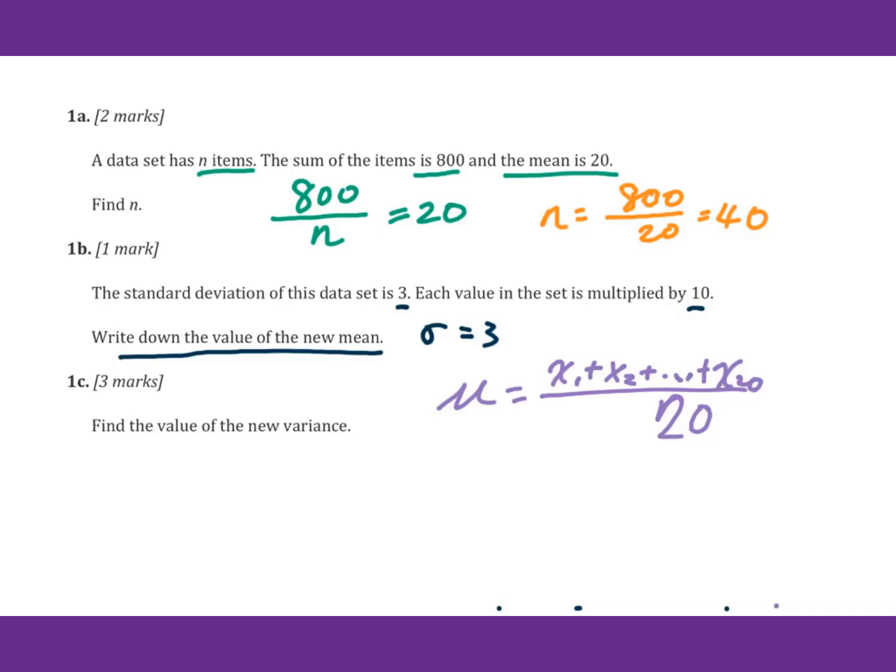For each value multiplied by 10, you will get this multiplied by 10. Therefore, since the old mean is 20, then times 10 equals 200. The new mean equals 200.